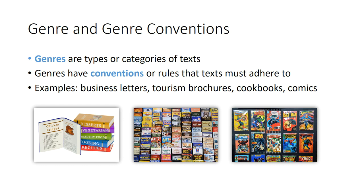Another concept you'll hear a lot in class is genre and genre conventions. Genres are types or categories of texts — or films or songs. In our translation class, we're focused on types of texts. A genre is just a kind of text, and genres have conventions or rules that texts must adhere to. For example, to be a comic book, it has to have certain characteristics in language, images, and page range.